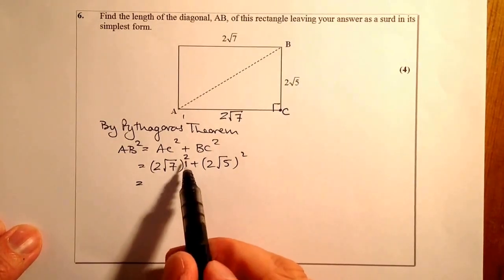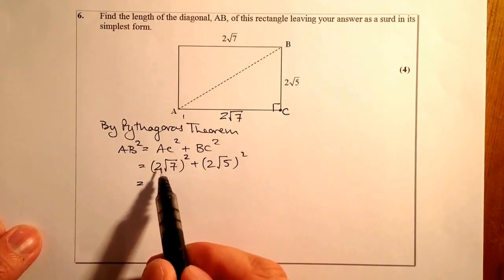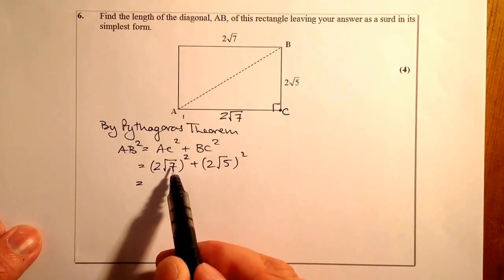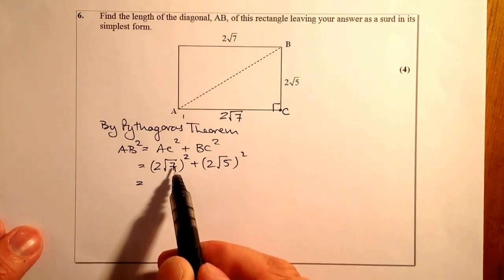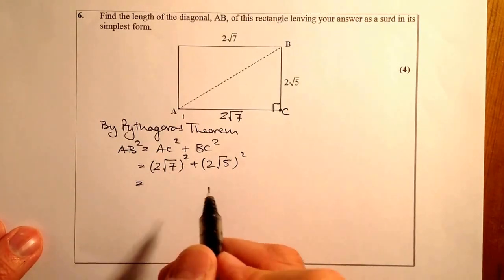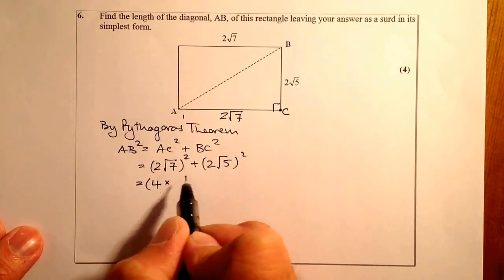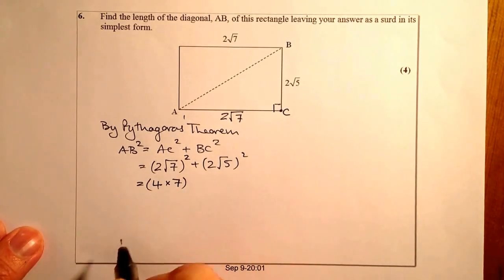Now remember, when I square something like this with numbers and a surd here, what I'll do is I'll square the 2 and I'll multiply that by the √7 squared. And √7 squared is going to be equal to 7. So 2 squared is going to give me 4 times 7. Because remember that √7 squared is going to be equal to √7 times √7.